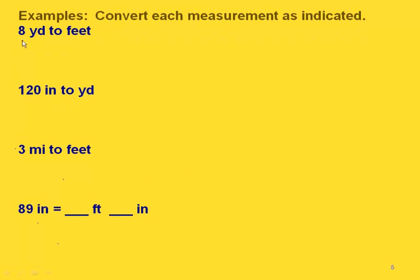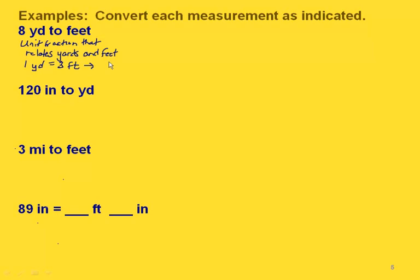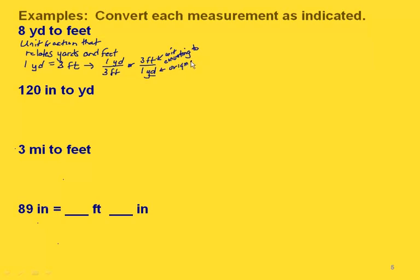Let's do more examples. To convert 8 yards to feet, we need a unit fraction that relates yards and feet. We know that one yard equals 3 feet, so we have two unit fractions. Since we're starting with yards and converting to feet, we want yards on the bottom and feet on the top. So we pick 3 feet over 1 yard.